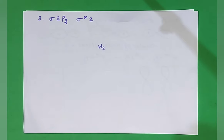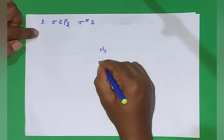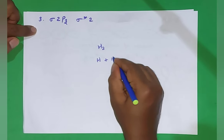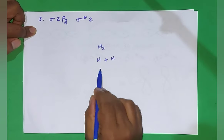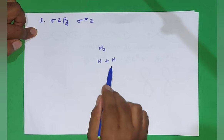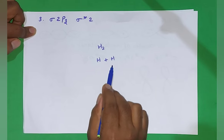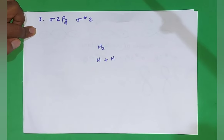How is the H₂ molecule formed by the combination of two atoms? Two atoms means one hydrogen atom plus another hydrogen atom, where the atomic orbital of the first hydrogen atom and the atomic orbital of the second hydrogen atom are combining to form a molecular orbital.